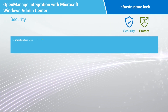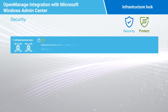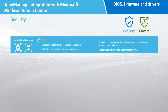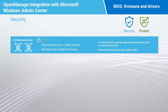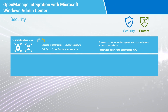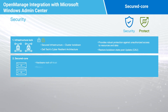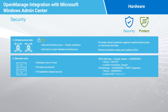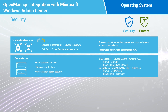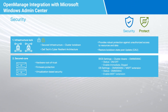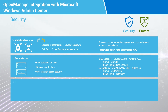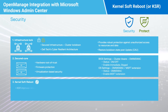Very briefly explained: Infrastructure Lock prevents the infrastructure from any unintended configuration change or update to BIOS, firmware, and drivers. Whereas Secured Core works proactively to help prevent attacks by protecting the infrastructure across hardware, firmware, drivers, and operating systems. We can easily enable or disable both features from our Windows Admin Center extensions.